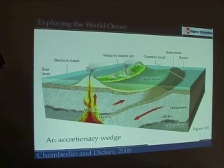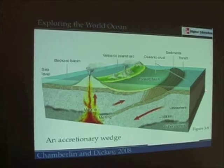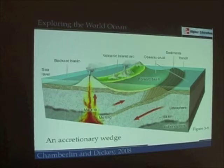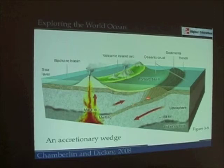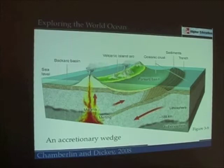Going back to our plate tectonic figures — this is figure 3-9 — as one plate is thrust underneath another in the process of subduction, in this case oceanic-oceanic subduction, the sediments that have accumulated on the plate during its travel from the oceanic ridge to the subduction zone get scraped off. They form what are called accretionary wedges. These sediment deposits can get quite extensive and have interesting geologic properties — you should just be aware that they occur.